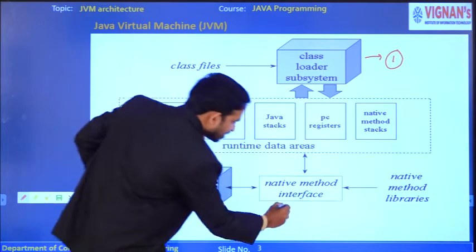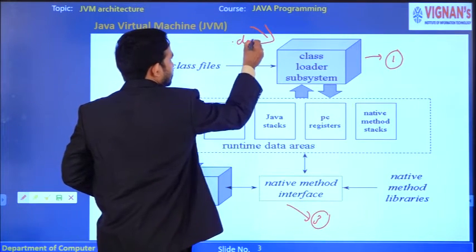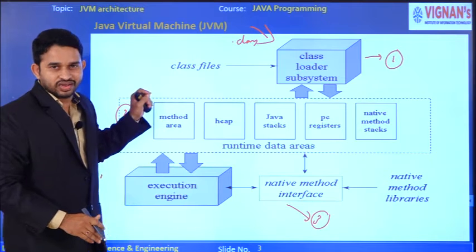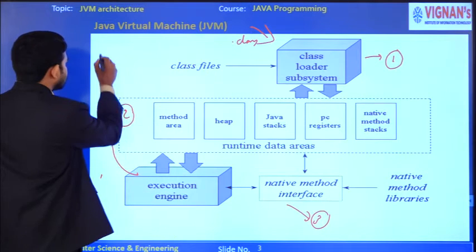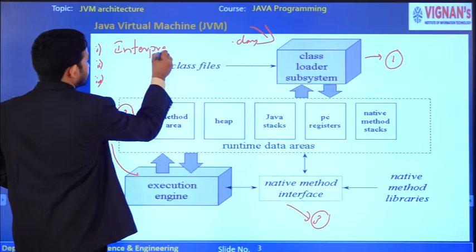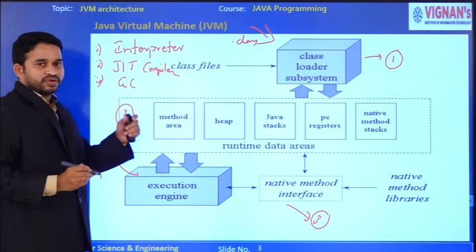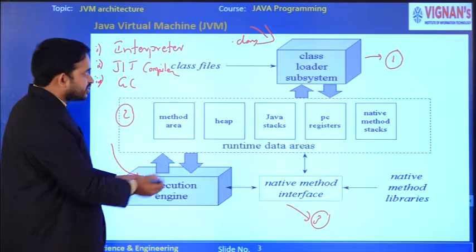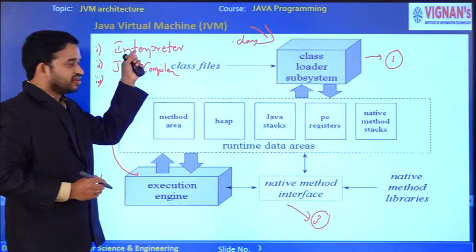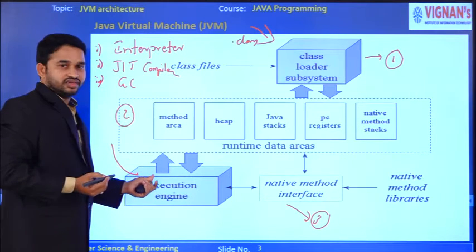The third part is the execution engine. Until now, we loaded the .class file and placed it in the memory area without any execution. Now with the execution engine, we actually execute the .class file. The execution engine contains three important components: interpreter, JIT compiler, and garbage collector.